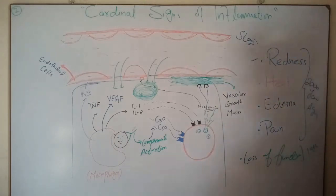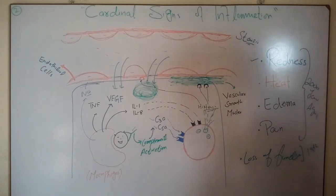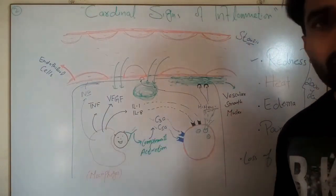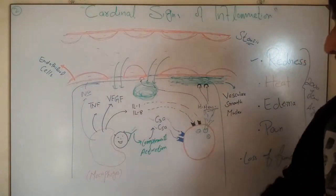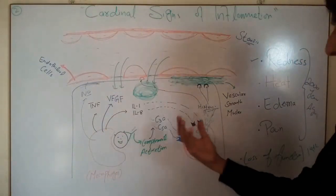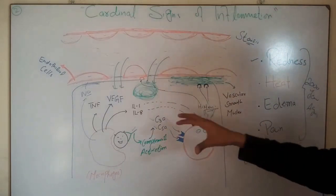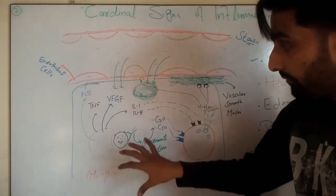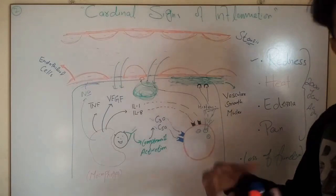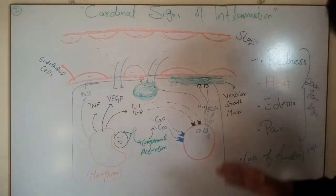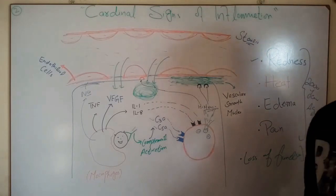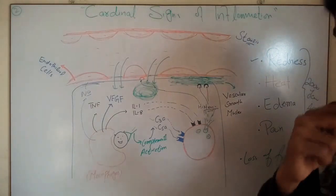Loss of function is the fifth cardinal sign. In this inflammatory process, tissue or cells are continuously being damaged by host cells and by pathogens or their toxins, which can ultimately result in loss of function of a tissue or in some cases a whole organ. These are the five cardinal signs of inflammation.